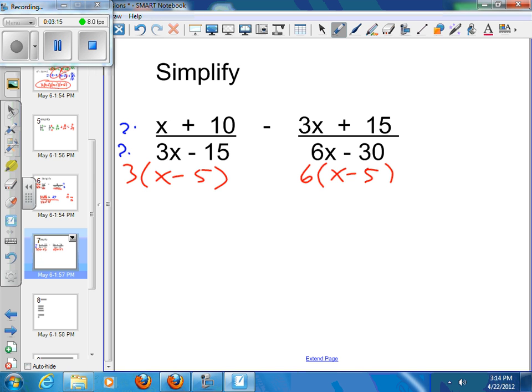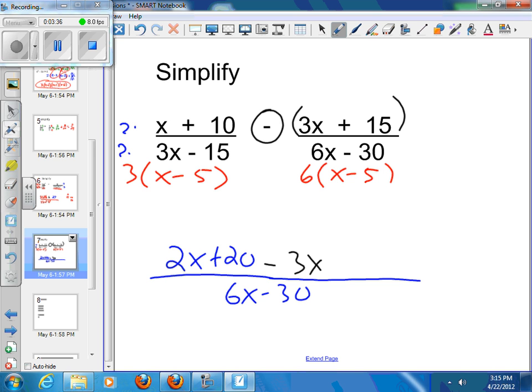So that's going to become 2x + 20 over 6x - 30. And then I've got what was left over on the other side, which was minus 3x. It's a minus sign out here, so that means there's assumed parentheses in here. So don't forget to move that negative sign all the way across. So it's minus 3x minus 15.